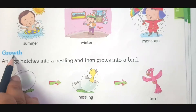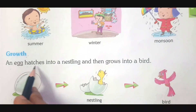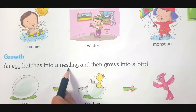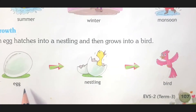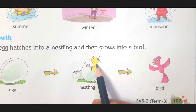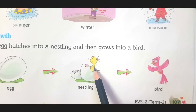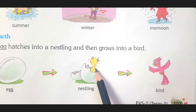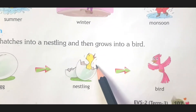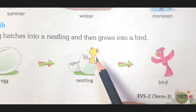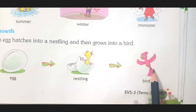Next: Growth — G-R-O-W-T-H. An egg hatches — H-A-T-C-H-E-S — into a nestling, and then grows into a bird. This is an egg, children. The egg hatches into a nestling. A nestling is a small baby bird — a small chick which cannot fly. It doesn't have feathers to fly and is not ready to leave the nest — that is why it is called a nestling. Then slowly, when it grows with feathers, it can fly and becomes a bird. This is also a natural change.